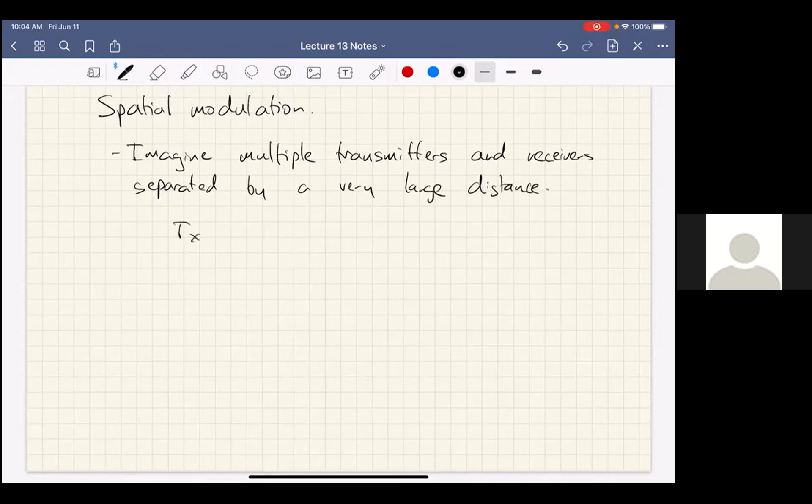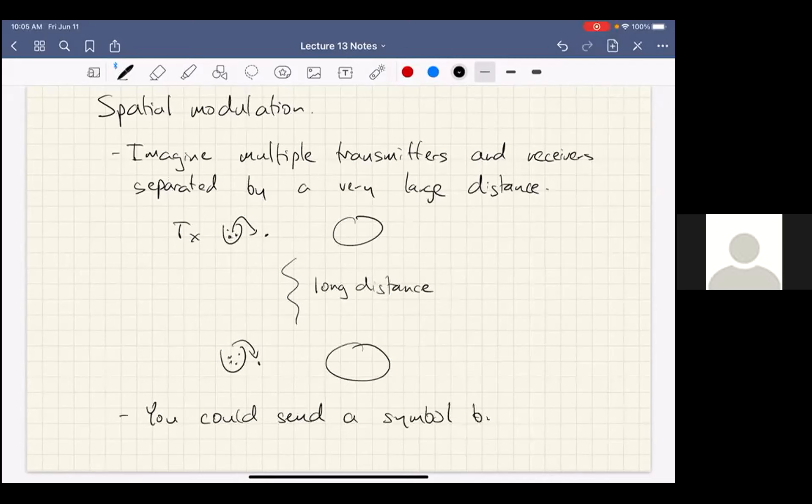In other words, you would have a transmitter over here releasing molecules into the environment and a receiver volume, and a different one a long distance away, a different one potentially releasing molecules into the environment and a receiver volume over here. You could send a symbol by selecting which receiver to use. That's the idea of spatial modulation.